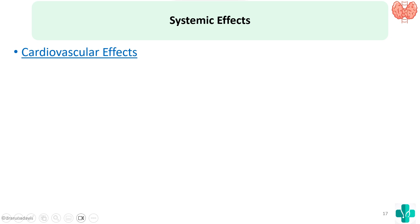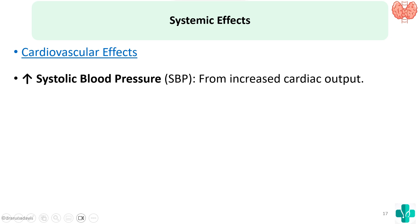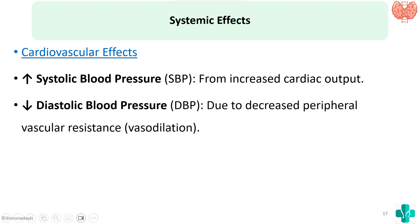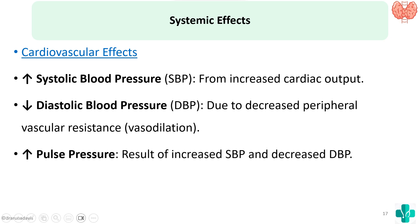Thyroid hormone increases systolic blood pressure because cardiac output is increasing. However, it decreases peripheral vascular resistance, so diastolic blood pressure decreases. Since pulse pressure is the difference between systolic and diastolic blood pressure, the pulse pressure would be increased. In summary: increased heart rate, increased stroke volume, increased cardiac output, increased systolic blood pressure, decreased diastolic blood pressure, and increased pulse pressure.